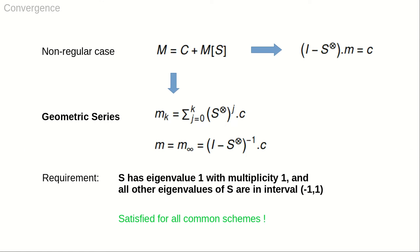Next, we discuss the convergence criteria for the geometric series that is applied for non-regular patches. The matrix in the series is Kronecker S. In the limit, the series converges to the inverse of the identity matrix minus Kronecker S,